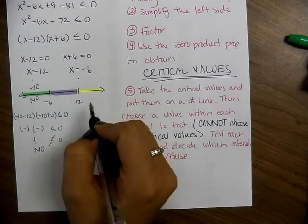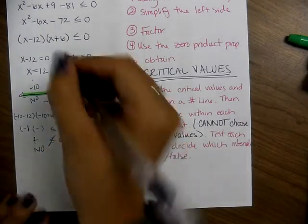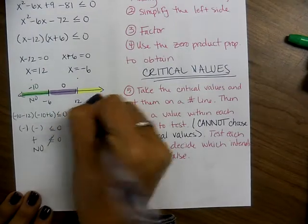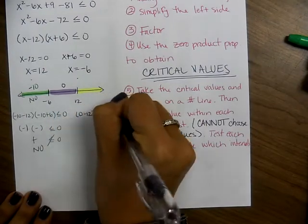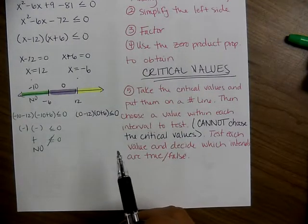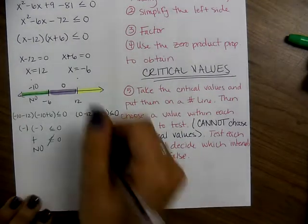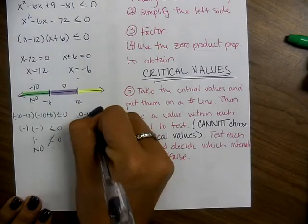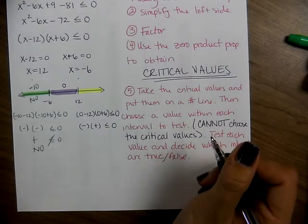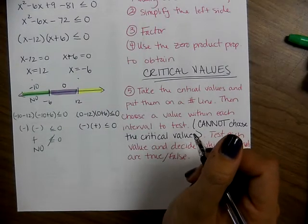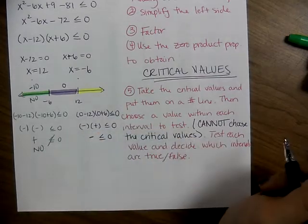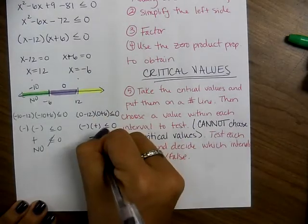Now I go to the next interval and choose 0 — it's the easiest. Plug in 0: 0 minus 12 times 0 plus 6, checking if that's less than or equal to 0. Don't worry about negative 12 times positive 6 — just think about the signs. This is a negative times a positive. A negative times a positive is less than or equal to 0, yes — it produces a negative. So this interval is true.